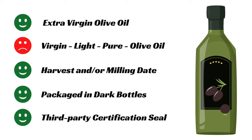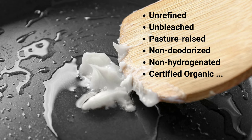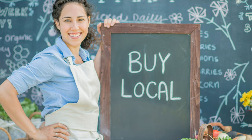Look for some third-party certification to help select the highest quality products, and check the resources section for more details. When choosing solid fat products, look for keywords like unrefined, unbleached, pasture-raised, non-deodorized, non-hydrogenated, and relevant certified organic seals for your geographic location. Supporting local farmers is also a great approach and gives you the opportunity to ask clarification questions about their products and practices.